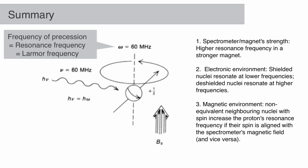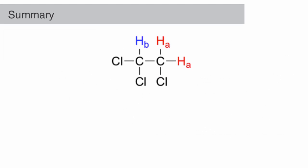And third, non-equivalent neighboring nuclei with spin. When the magnetic moments are aligned with the spectrometer's magnetic moment, that increases the proton's Larmor frequency. The opposite situation decreases the Larmor frequency.